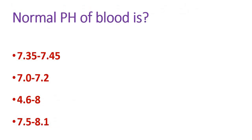Next question: the normal pH of blood. The options are 7.35 to 7.45, 7.0 to 7.2, 4.6 to 8, and 7.5 to 8.1. The normal pH of blood is 7.35 to 7.45. Any value below 7.35 is known as acidic and above 7.45 is known as alkaline.